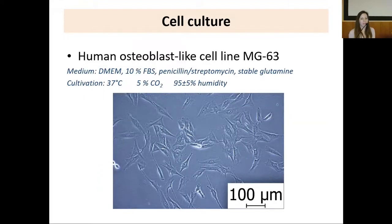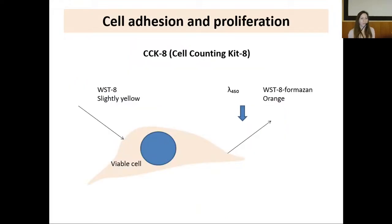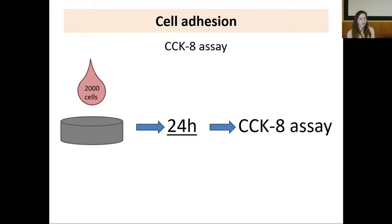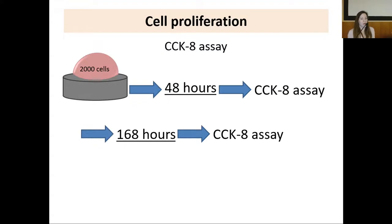Purchased human osteoblast-like cell line MG-63, obtained from osteosarcoma, was used for our experiment. Cultivations were performed under standard conditions. Cell adhesion and proliferation were evaluated using Cell Counting Kit-8 (CCK-8). This method is based on the ability of viable cells to reduce water-soluble tetrazolium salt to an orange formazan product, which is directly proportional to the number of living cells. 2,000 cells were seeded per implant; cell adhesion was evaluated after 24 hours, and cell proliferation was measured after 48 hours and after 168 hours.